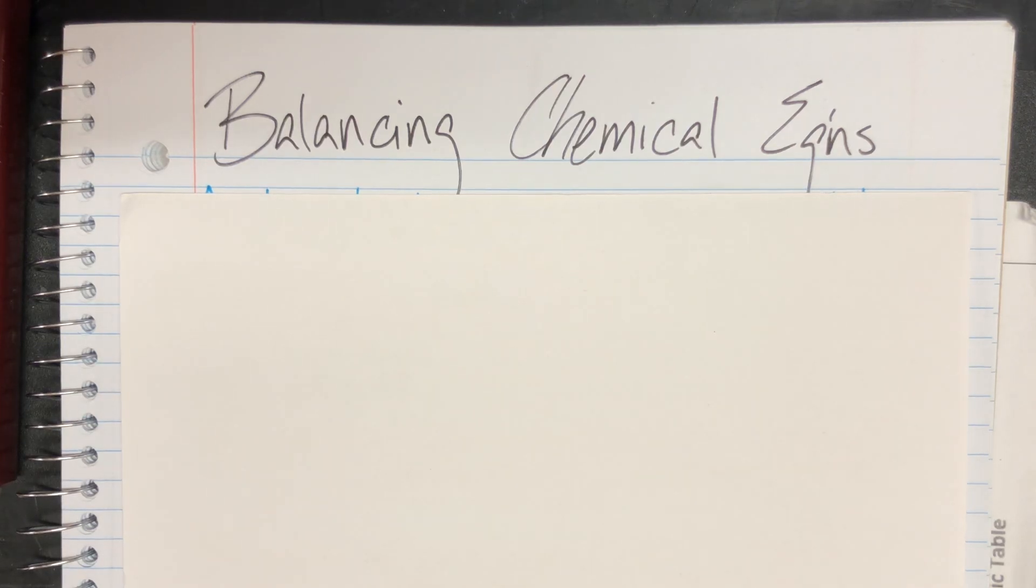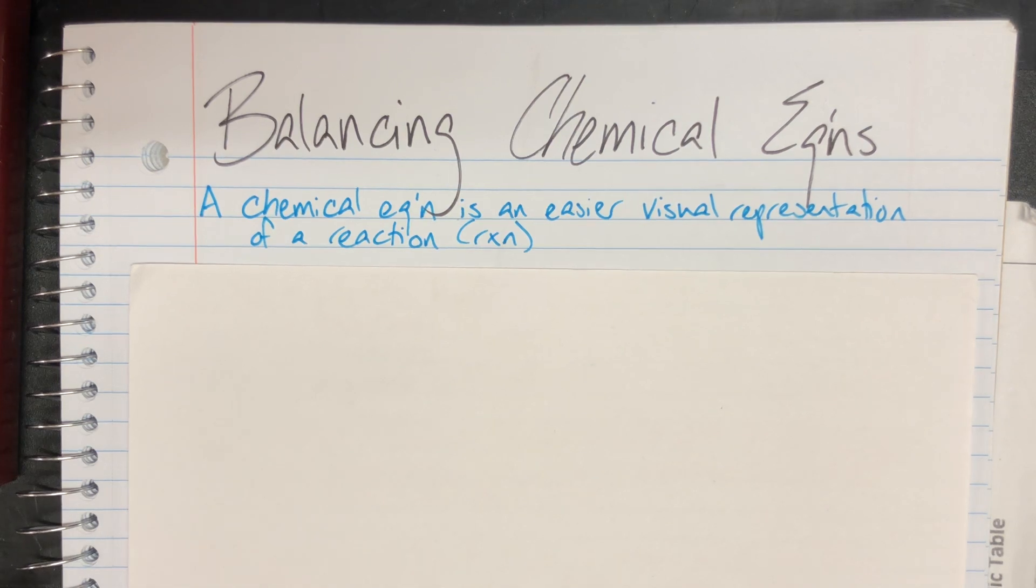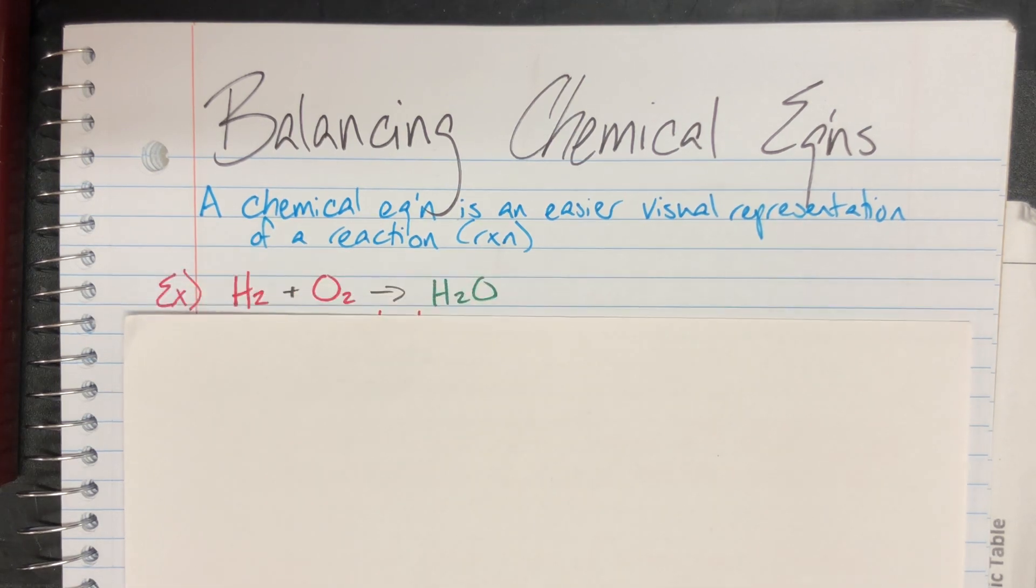Today we'll be discussing balancing chemical equations. A chemical equation is an easier visual representation of a particular reaction rather than drawing out Lewis dot structures or Bohr models of an atom. I'm going to be utilizing the formulas and symbols from the periodic table to help show what is actually happening at a molecular level in a chemical reaction.